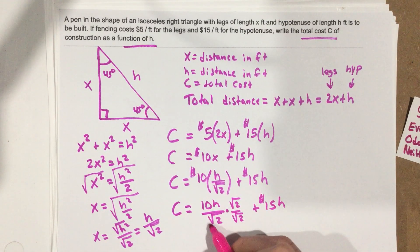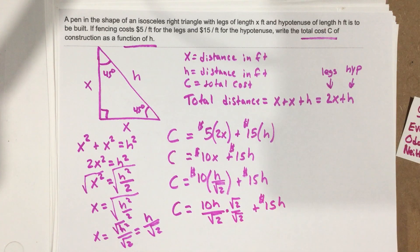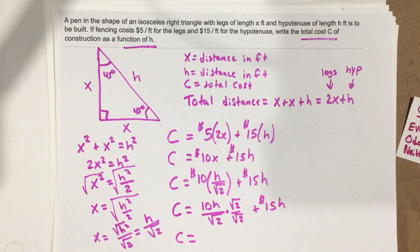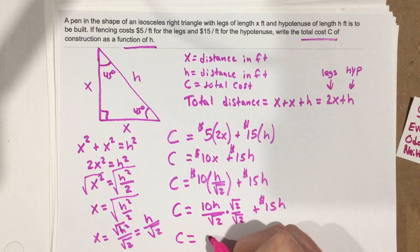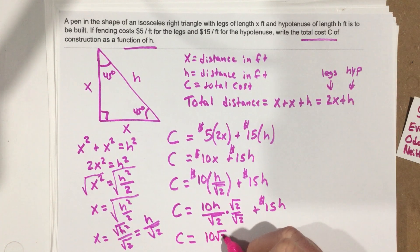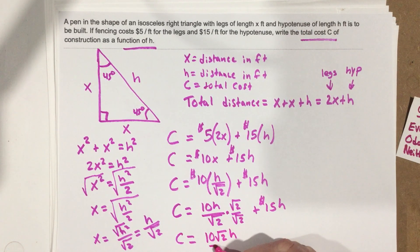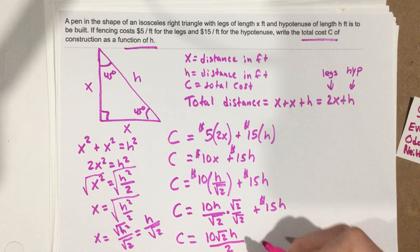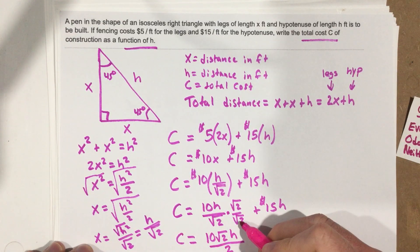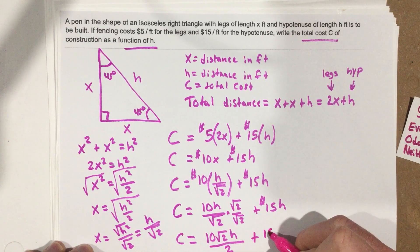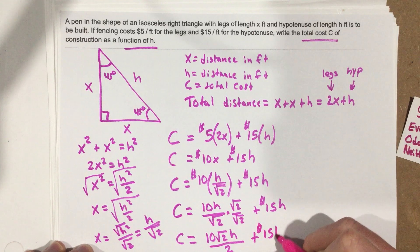When I multiply this, remember, I'm just trying to get this radical out of the denominator. I'm going to end up with C equals 10 root 2 H over 2, right? Root 2 times root 2 is root of 4, which is just 2, plus $15H.